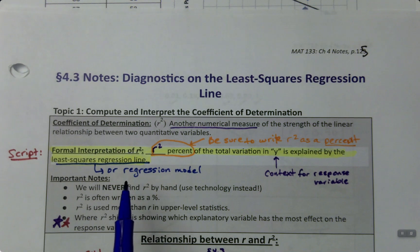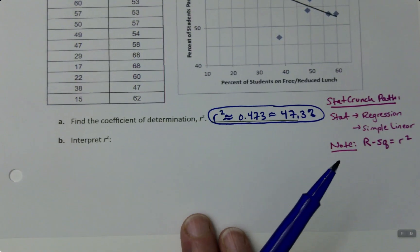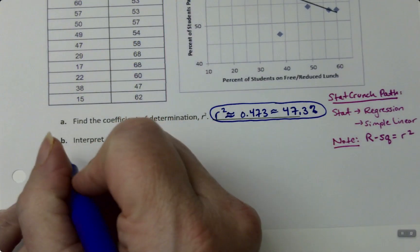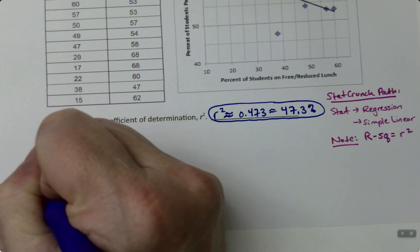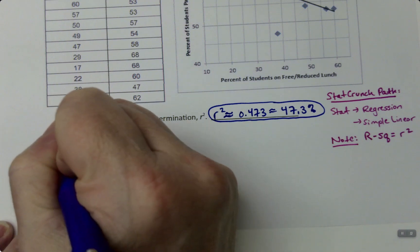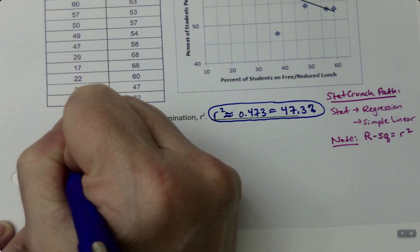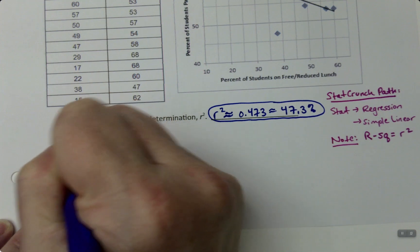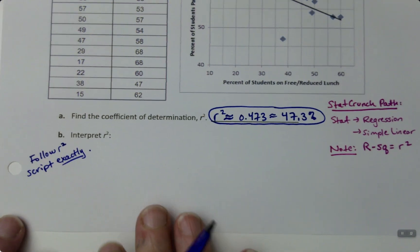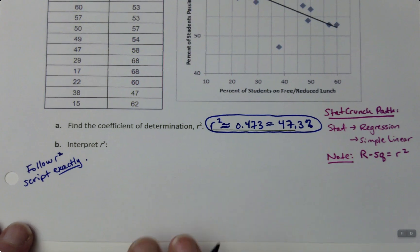So let's do that. I'm going to say follow the script for R-squared exactly. Do not deviate from that script. That script is written the way it is for a very particular reason.